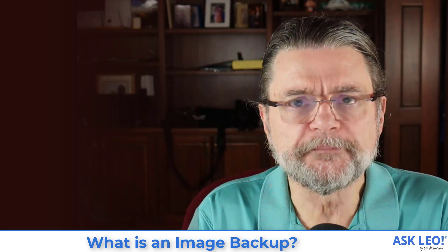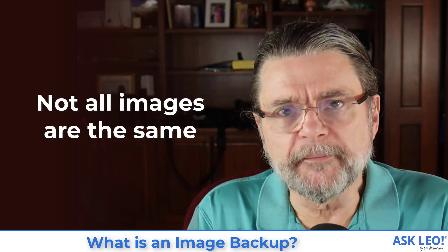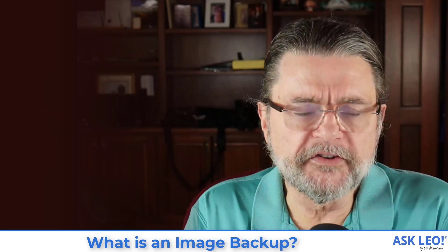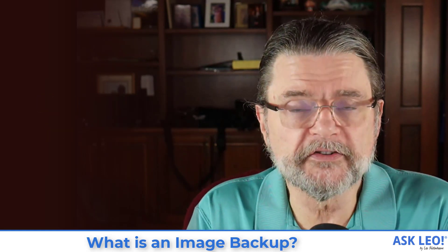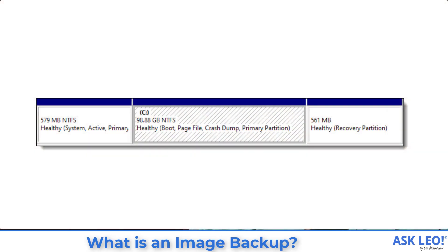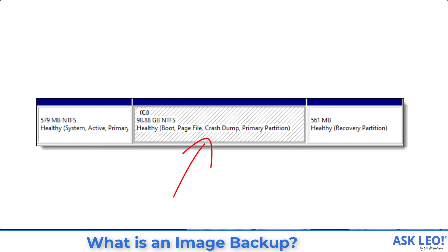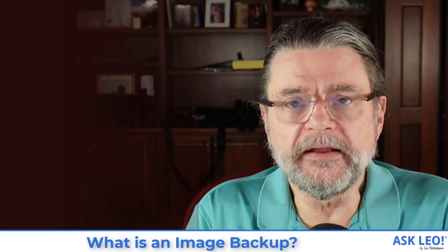There's still some more confusion — not every image is the same. If we take a look at a common hard disk, you'll see that there are what are called partitions. A single physical hard drive can be broken up to look like more than one drive. In the example here on the screen, you'll see there's a recovery partition and a system partition — both relatively small — and then of course a big C drive, a C partition that is the data you and I consider to be the disk. An image can be either an image of a single partition — everything in that partition — or it can be the entire hard disk.